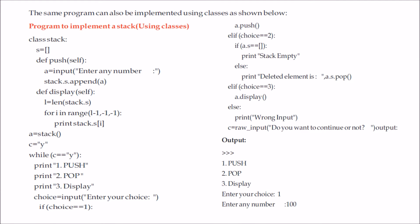Now there is a similar program implemented using a class. You make a class called Stack. Inside you create an empty list and implement push and pop as methods. The push function inputs a number and appends it to the list. For the pop function, you check whether the stack is empty; otherwise you call stack.s.pop() which pops the topmost element. The display function takes the length of the list and shows elements from last to first.